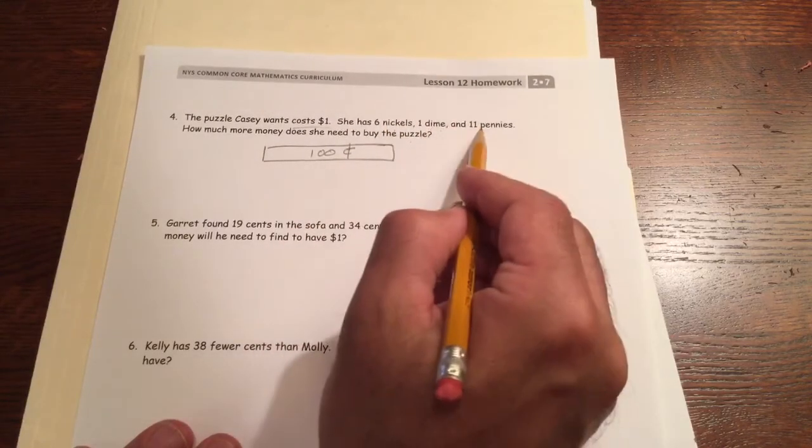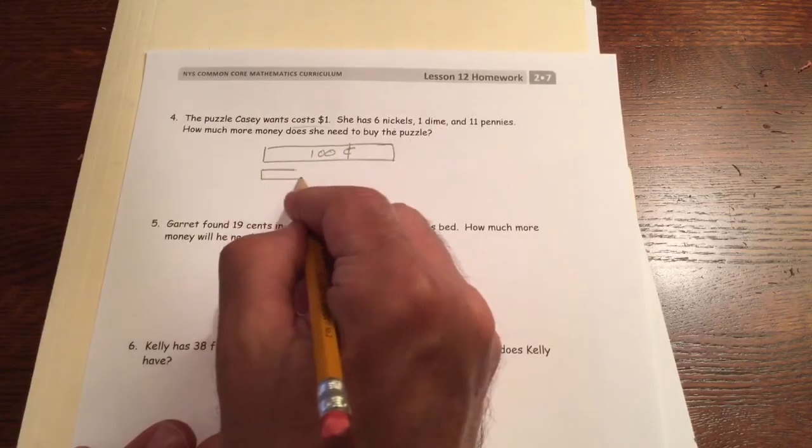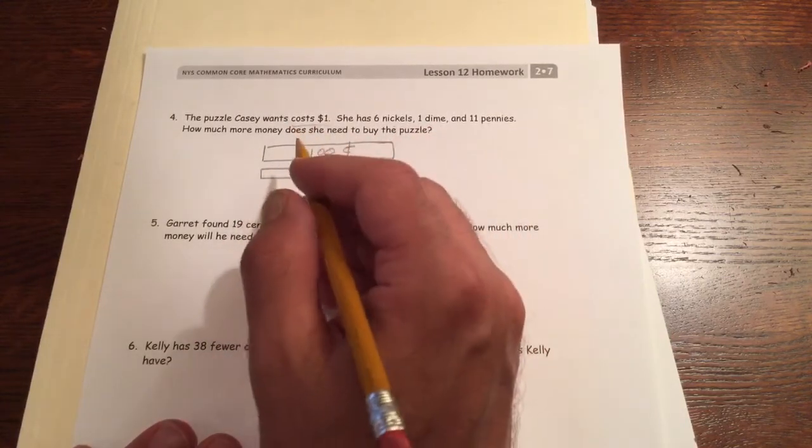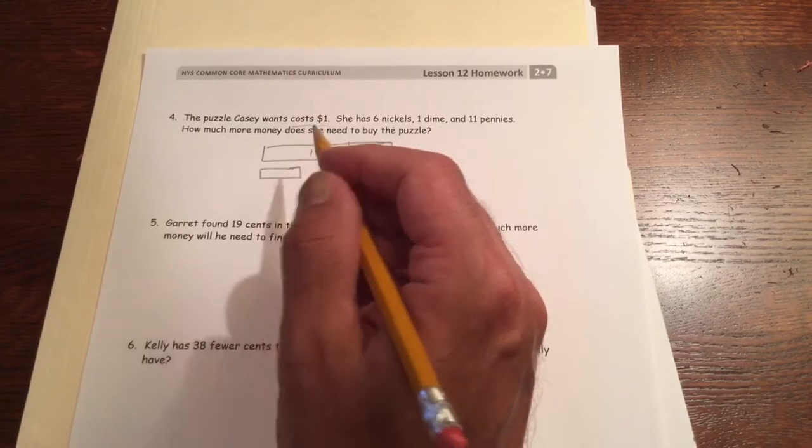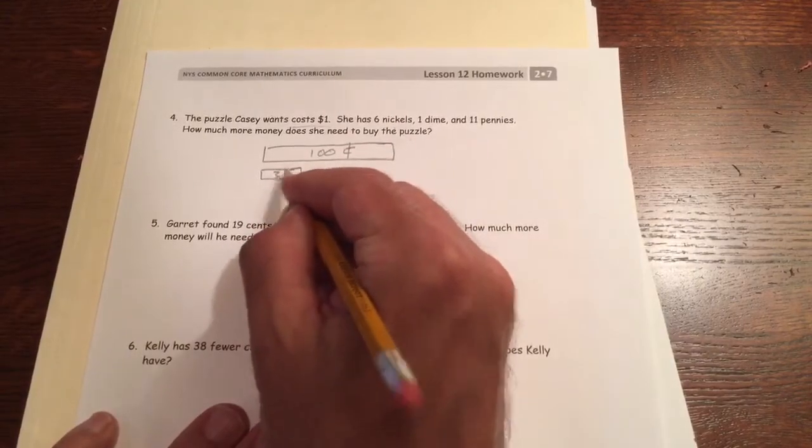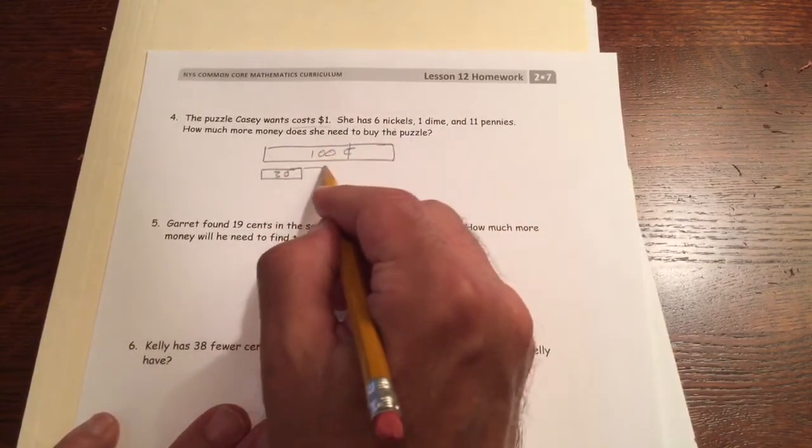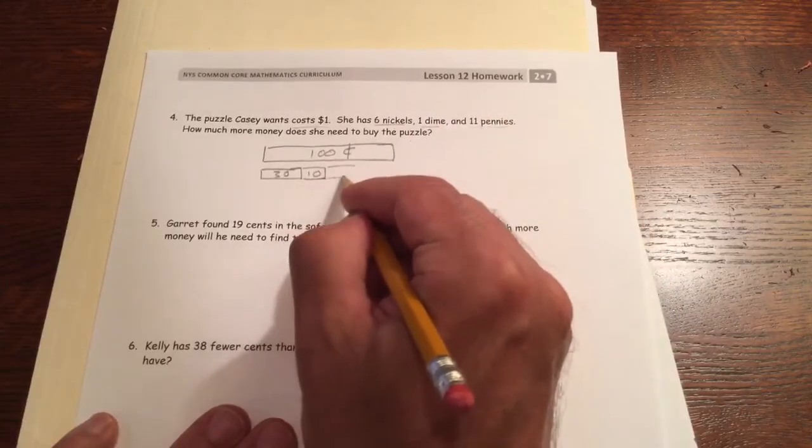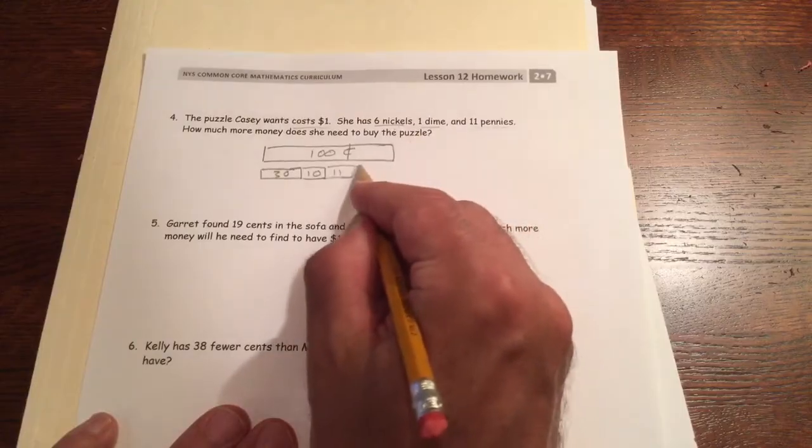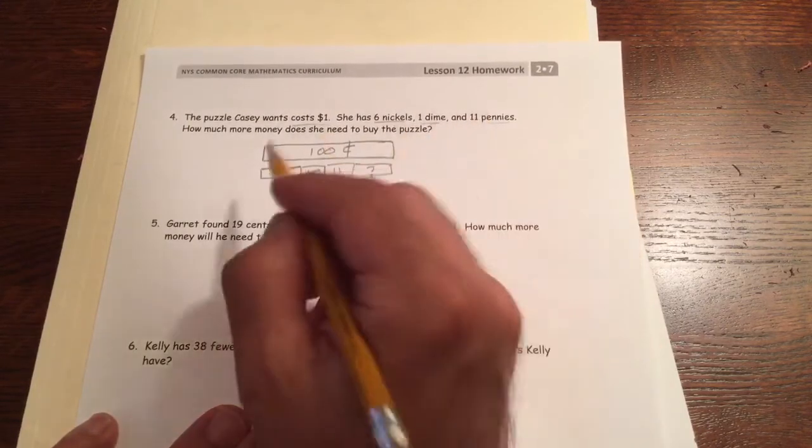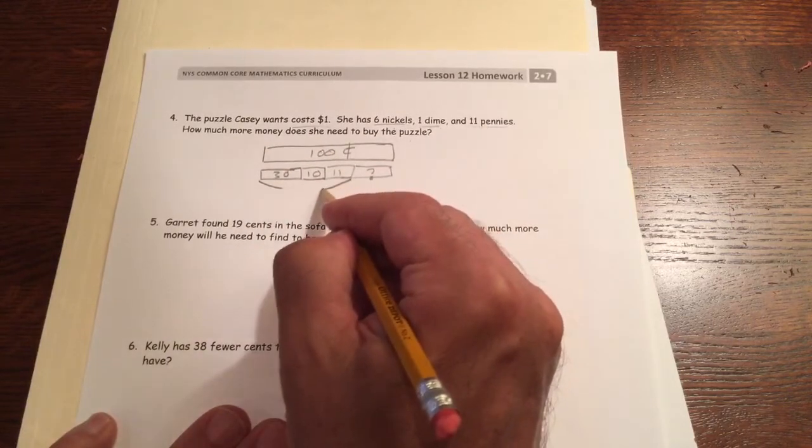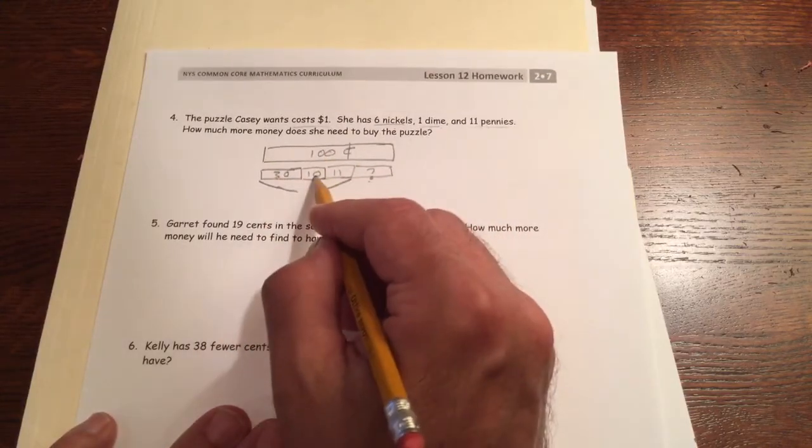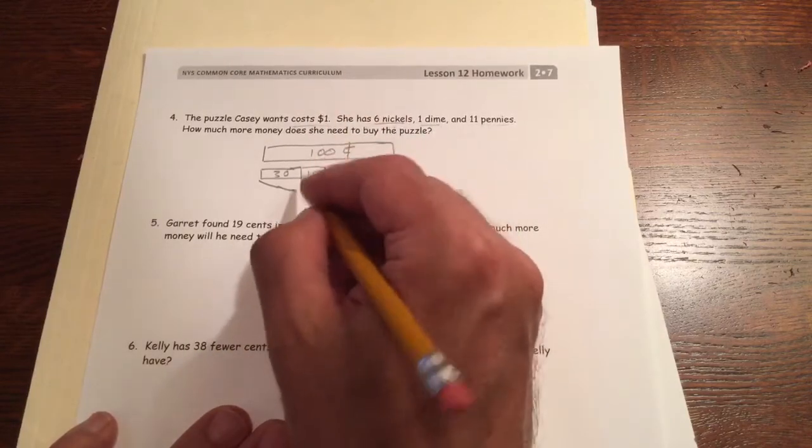She has six nickels, a dime, and 11 pennies. The six nickels, that's six fives. We can count that by five: 5, 10, 15, 20, 25, 30. Six fives is 30 in nickels. The dime is another 10. Eleven pennies, we'll just call that 11. This is the how much more. So 30, 40, and 11 is 51.